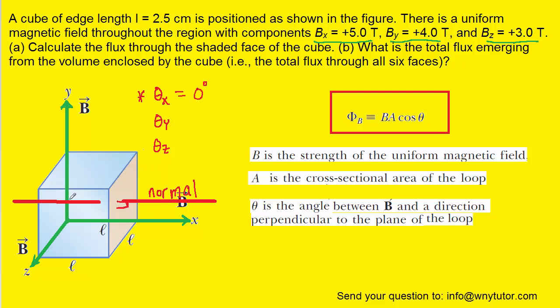For the y-axis, the same idea. We want to figure out the angle between the normal line and the magnetic field that's projecting along the positive y-axis. And if we look carefully, that is indeed a 90 degree angle. So we can say that theta y is equal to 90 degrees.